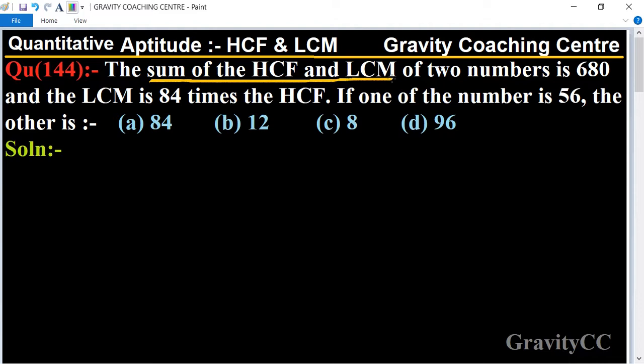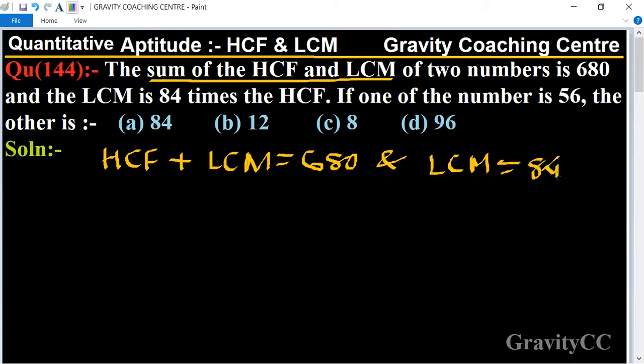In this question, given that the sum of HCF and LCM, so HCF plus LCM equal to 680. And the LCM is 84 times HCF, so LCM is equal to 84 times HCF.